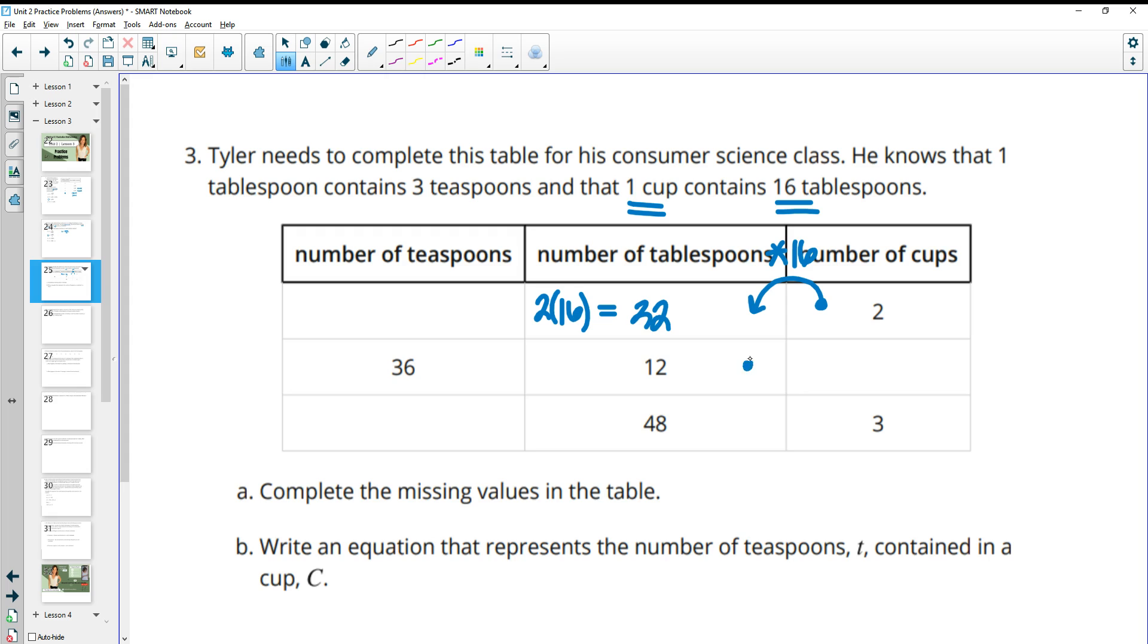So then the reverse of that, if we're going backwards, to get backwards we would divide by 16. So here we have 12 tablespoons, so we have 12 out of 16 cups, because we know that over 16 would be a cup. So 12 sixteenths of a cup, and we can simplify this down to three fourths of a cup. And then we can check this bottom one. Three times 16 is 48. So we started here, multiplied by 16 to get to that one.